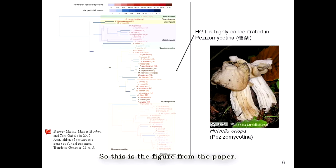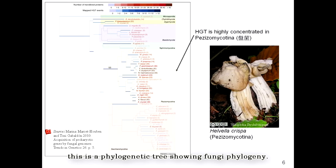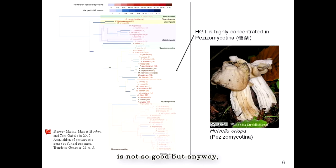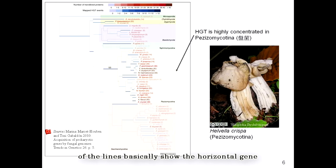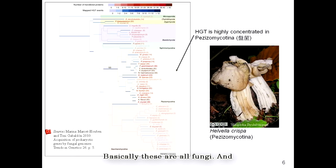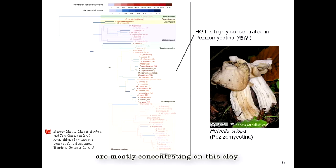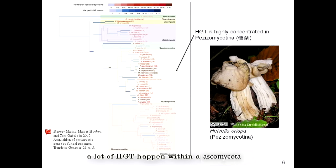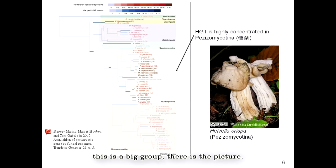This is the figure from the paper — a phylogenetic tree showing fungi phylogeny. The different degrees of color on the lines basically show the horizontal gene transfer events within a particular clade. These are all fungi, and you can see there are a lot of blue lines, which means HGT events are mostly concentrated in this clade compared to Zygomycota or Basidiomycota. So a lot of HGT happened within the Ascomycota, in a particular group called Pezizomycotina.